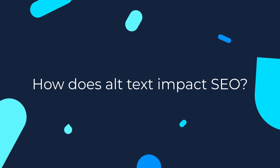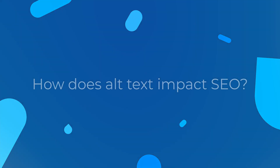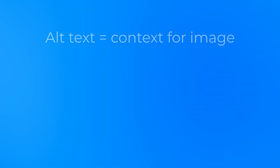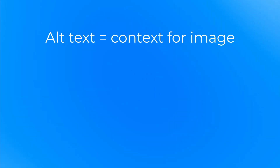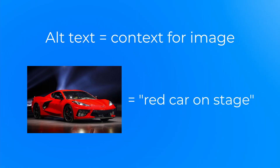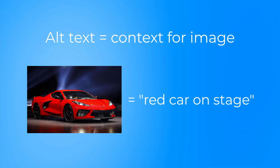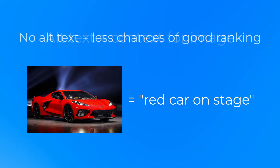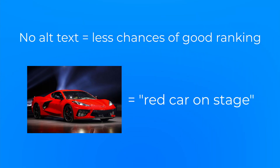The next topic is crucial: how does alt text impact SEO? Alt text provides context to what an image is displaying, informing search engine crawlers and allowing them to index an image correctly. However, not only do alt tags help search engine crawlers — not setting alt tags for your images can have a detrimental effect on the ranking of your web pages.